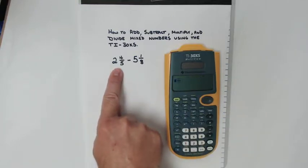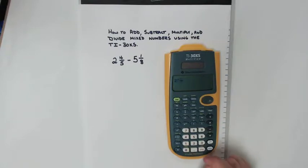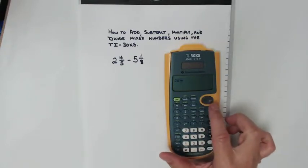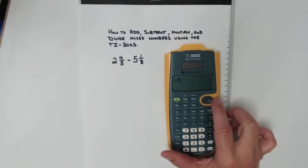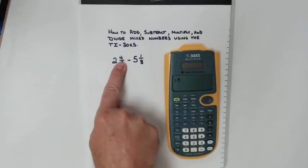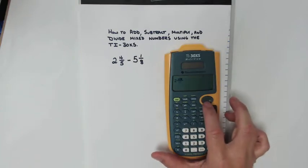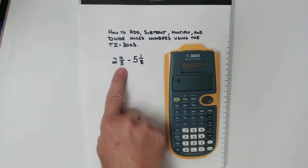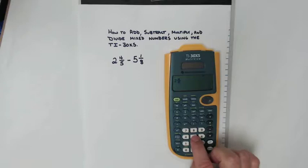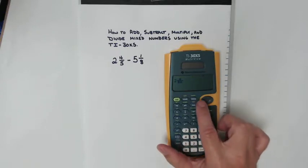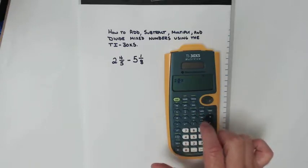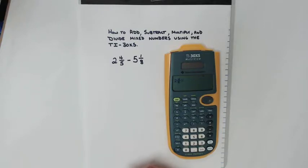Here's the mixed number we're going to create. Type in 2, use the circular pad to move it over. Now I'm in the top or the numerator. Here's my numerator, 4. Use the circular pad to go into the bottom. Denominator is 5. Press 5 and then use the circular pad to move over to use whatever operation you're going to use.